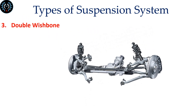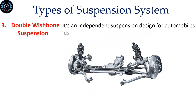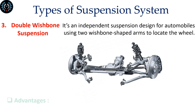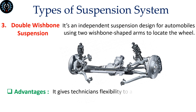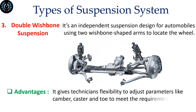Double Wishbone Suspension is an independent suspension design for automobiles, using two wishbone-shaped arms to locate the wheel. It gives technicians flexibility to adjust parameters like camber, caster, and toe to meet the requirements of the track or road.